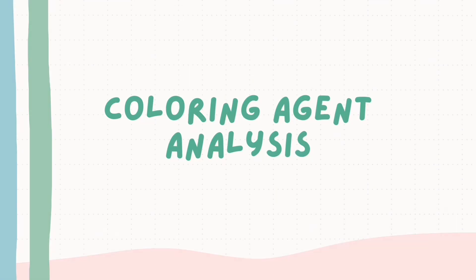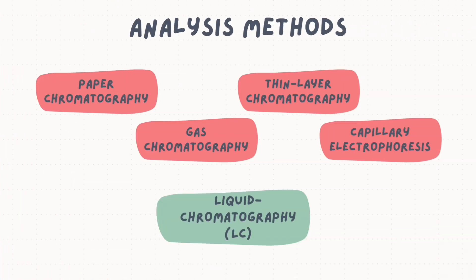Now let's discuss the analysis of coloring agents. Several types of analysis methods were widely used but are now considered outdated, such as paper chromatography, thin layer chromatography, gas chromatography, and capillary electrophoresis. However, over the past years, one method has shown much more potential for the analysis of coloring agents, which is liquid chromatography.